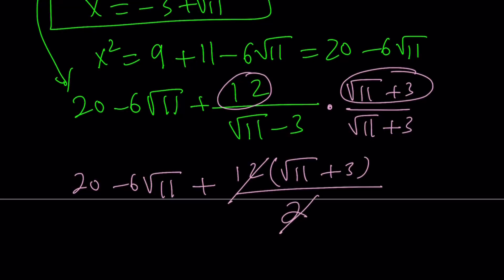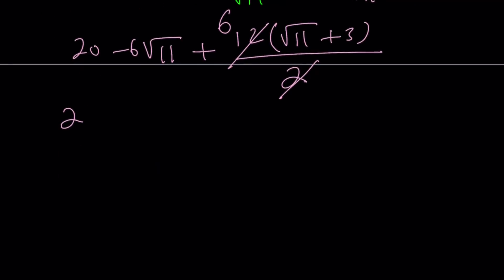And now I get 20 minus 6 root 11 plus, now I'm going to, what is that called? Distributive property. Okay. I'm going to use the distributive property. 6 times root 11 plus 6 times 3, which is 18. Awesome. Negative 6 root 11 cancels out. 20 plus 18 is 38.